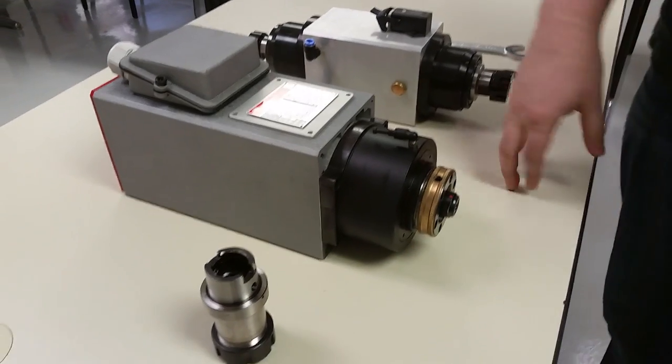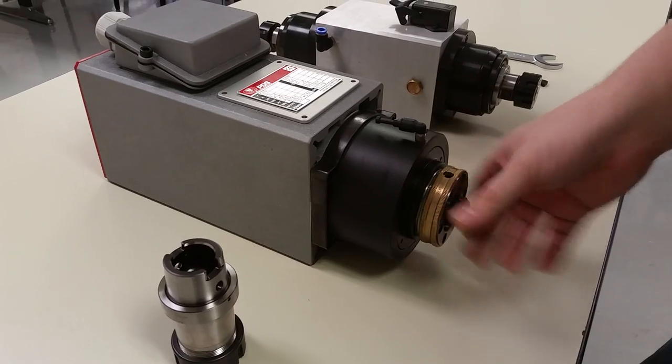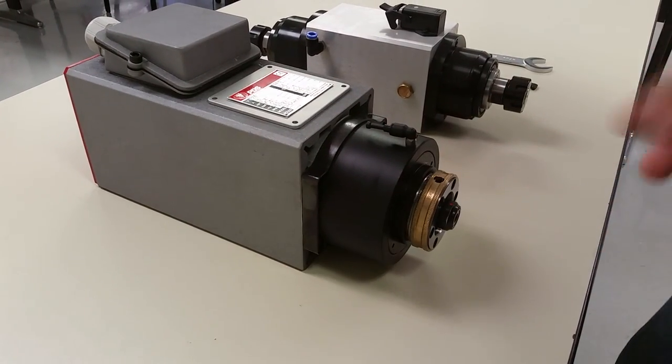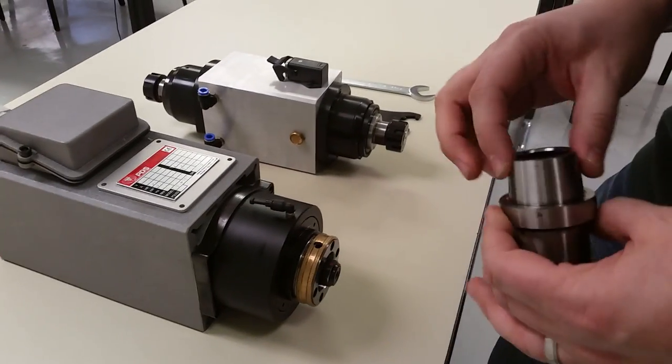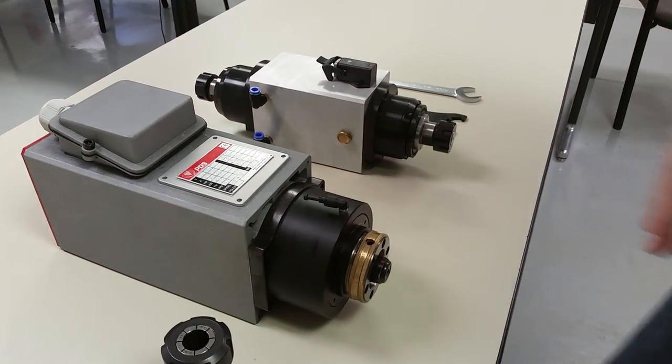Now, this HSKC spindle comes in a 32, an HSK40, an HSK50, and an HSK63. And that basically just denotes the different sizes of this part of the tool.